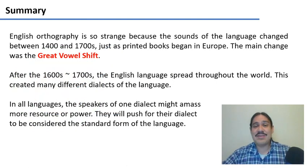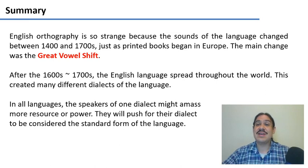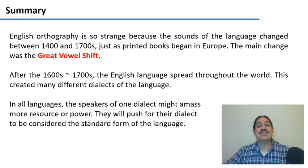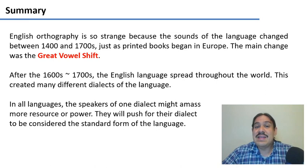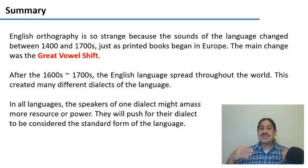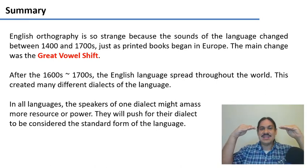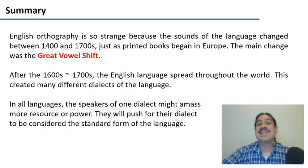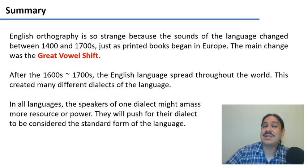That is a very summarized history of English. English orthography is weird because its sounds changed while its spelling remained as it was in the 1300s and 1400s — that main change is called the Great Vowel Shift. English has spread throughout the world, leading to many dialects, but also to the phenomenon of some dialects claiming to be better than others — a claim that is political, not linguistic. In the next video, I'll tell you a little more about how we can know that one language is related to another.